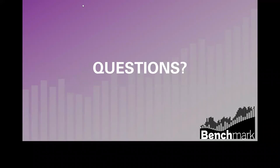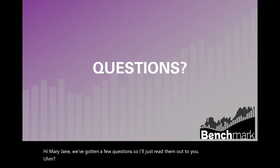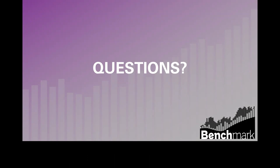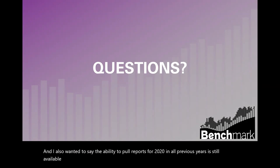We'll pause here briefly for questions about the annual survey before turning over to Gina. One question: I recall being able to pull ACRL metrics reports during the collection period — is that no longer supported? When you complete the 2021 survey, you should see your prior year responses displaying. If you need prior year responses, email us at ACRL Benchmark. The ability to pull reports for 2020 and all previous years is still available; we just won't load the finalized 2021 data until about three months after the survey closes.